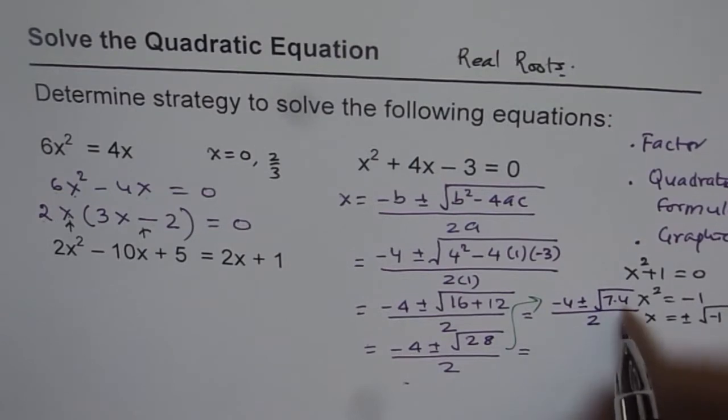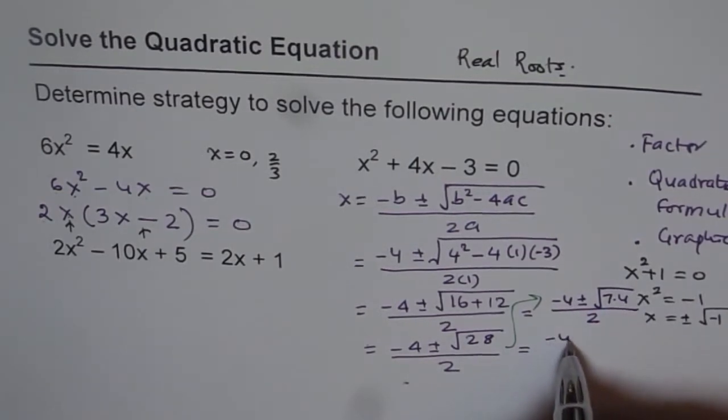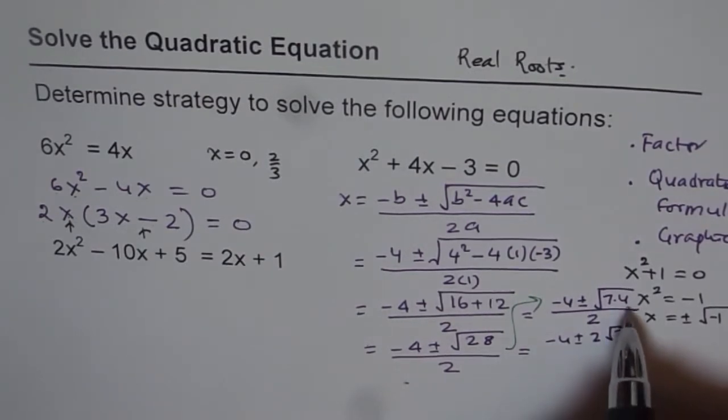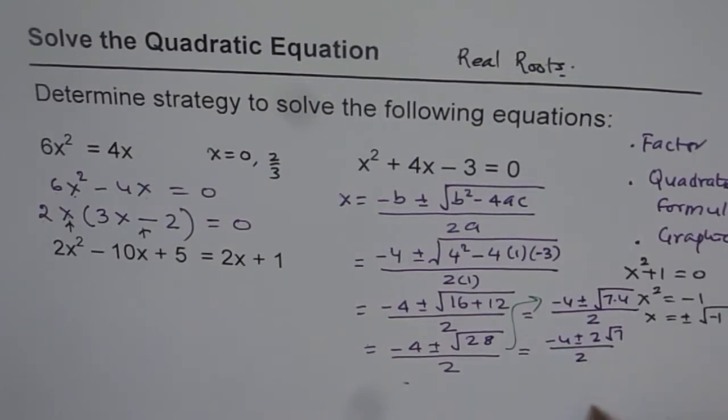and now 7 is not a perfect square, but 4 is. So we could write this as -4 ± 2√7, since square root of 4 is 2, divided by 2. Do you see that?